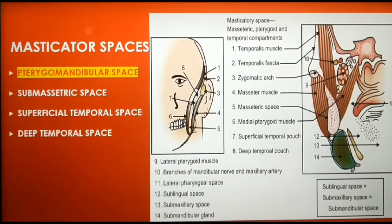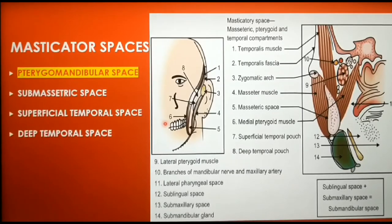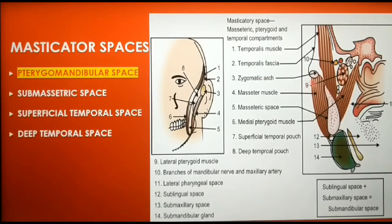The masticator space is formed by splitting of the investing layer of deep cervical fascia into superficial and deep layers. So the fascia defines its lateral and medial extent.